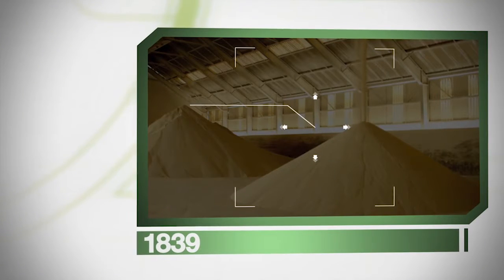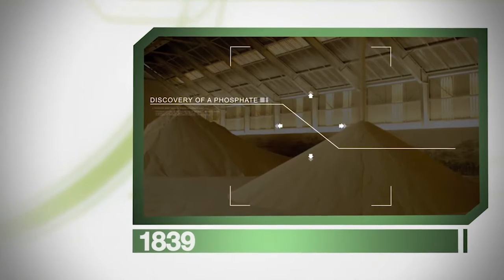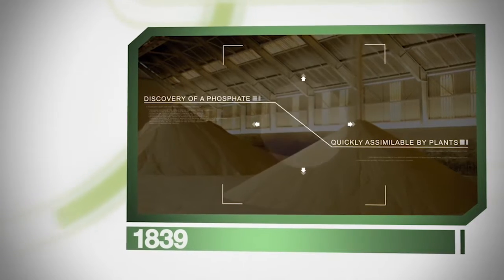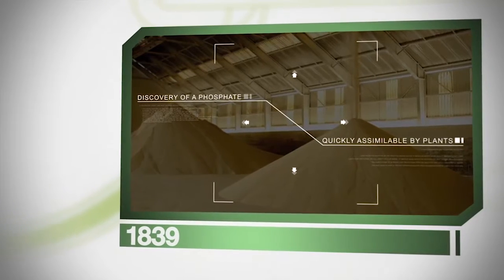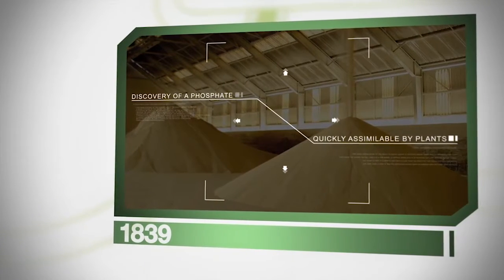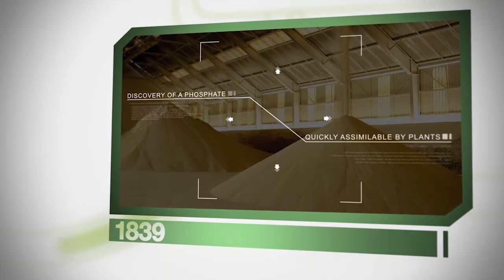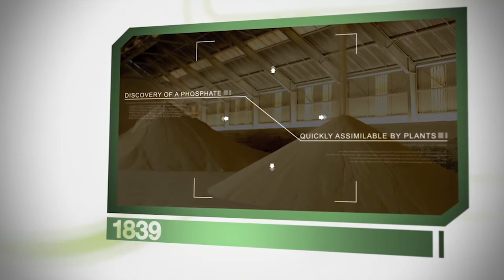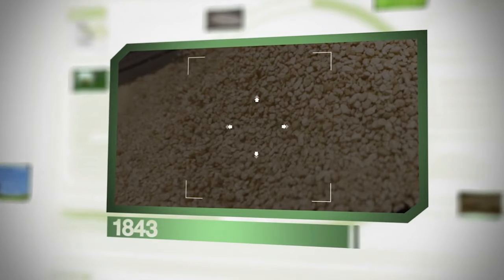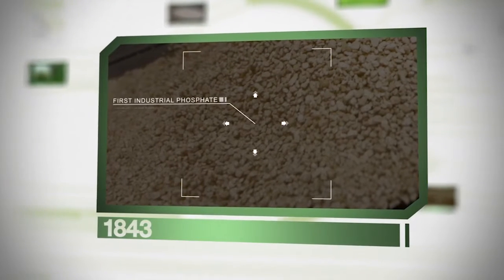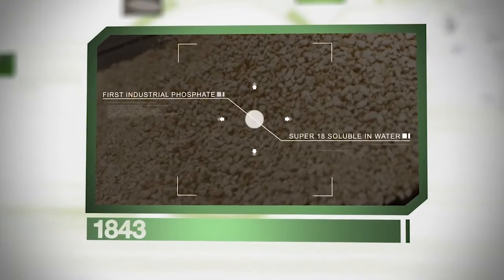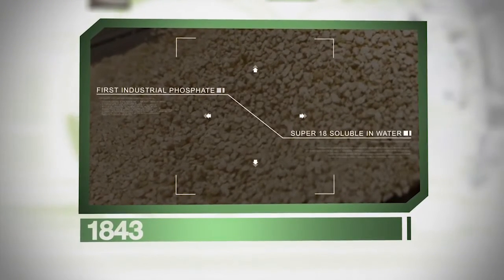Phosphorus has been used in fertilizers since Justus von Liebig found in 1839 a form of phosphorus which was quickly absorbed by plants and which led to significant gains in terms of yield. The first industrial production took place in 1843 using a combination of natural phosphate and sulfuric acid.